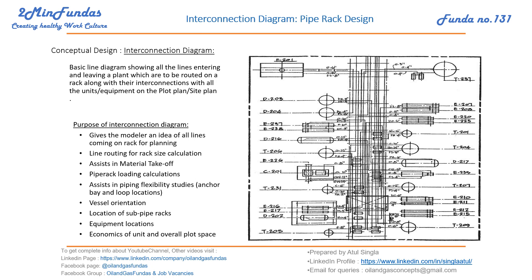We can generate an MTO from this document. For pipe rack loading calculation, since we know the size, length, and number of fittings in the pipe rack, we can start working on the loading diagram. It also assists in piping flexibility studies, where the stress team uses this diagram to finalize anchor and loop locations. It helps with vessel orientation and nozzle orientation — for example, planning that nozzles should face the rack. It also helps in locating sub pipe racks, where many lines entering a section can be grouped into a sub rack.